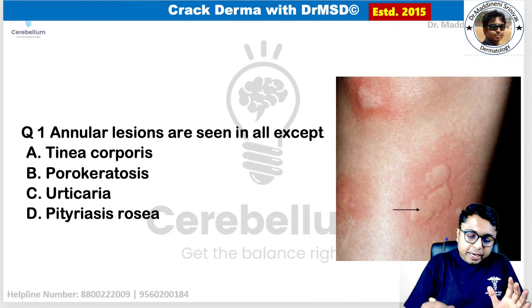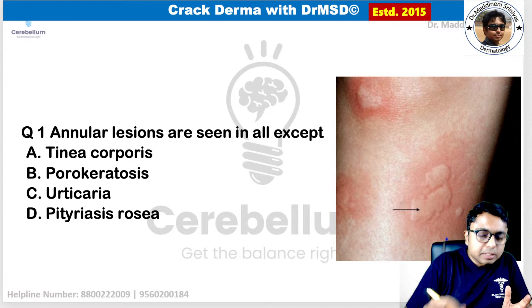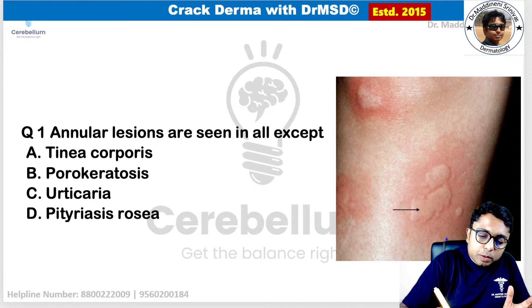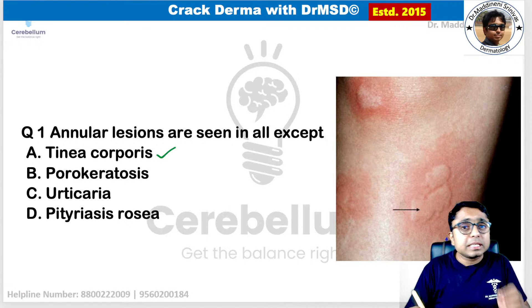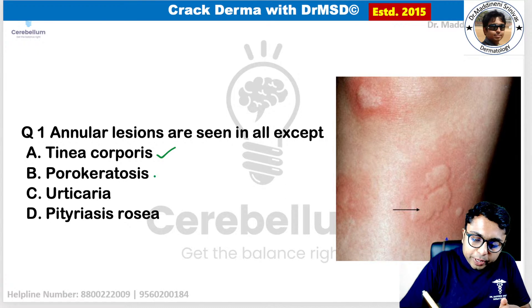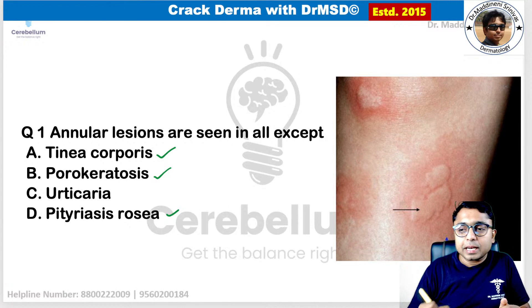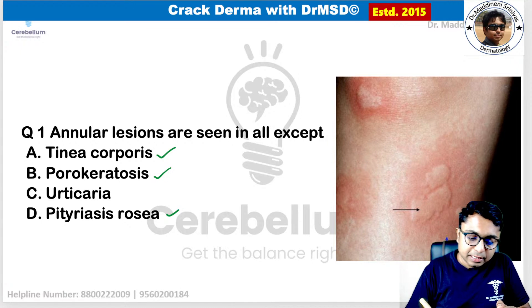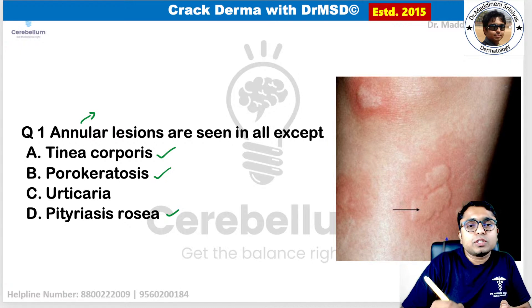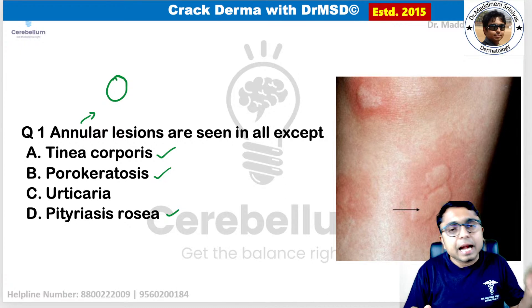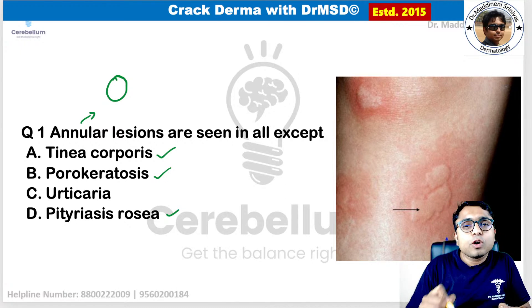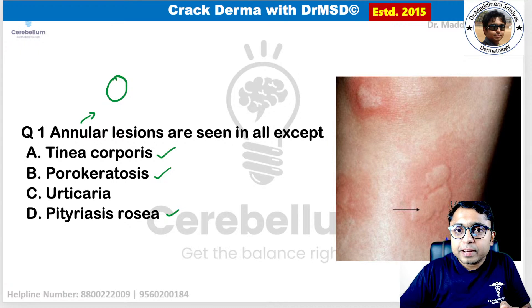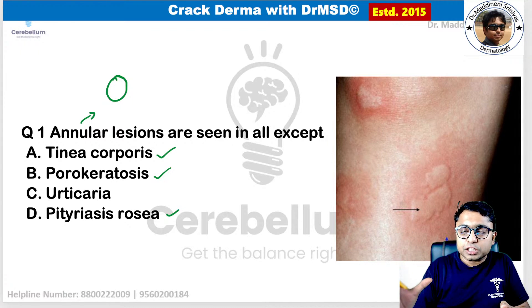Let's see all the options. Tinea corporis — we are going to see an annular lesion. Porokeratosis — we are going to see an annular lesion. Pityriasis rosea — we are going to see annular lesions. An annular lesion is a ring-shaped lesion with a different center and a different periphery. In tinea corporis, at the periphery there is a raised margin with scaling, and at the center there will be central clearing.